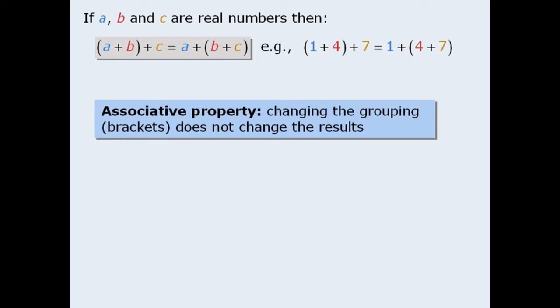Given this definition, we can see that multiplication is also associative. For example, if we take the product of 2 and 3 and then multiply that by 4, the result is the same as multiplying 2 by the product of 3 and 4.